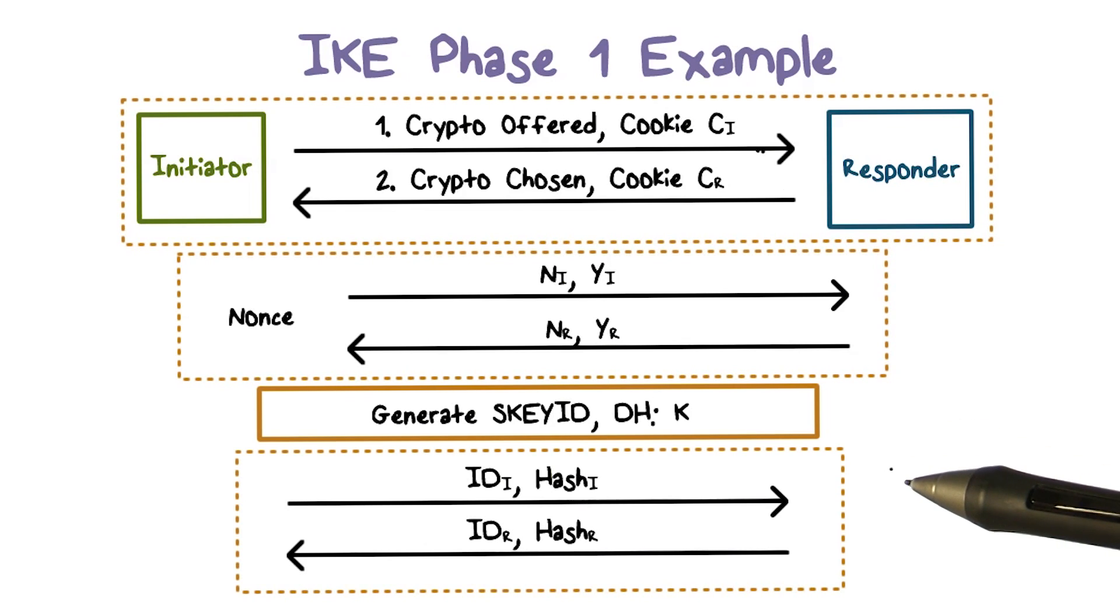they then exchange hash values to authenticate the newly established key using their pre-shared secret key. The hash is computed using the information that they have just exchanged along with the pre-shared key. We will explain this shortly.